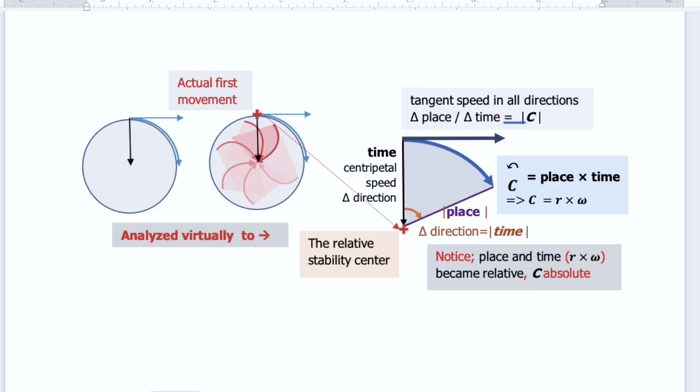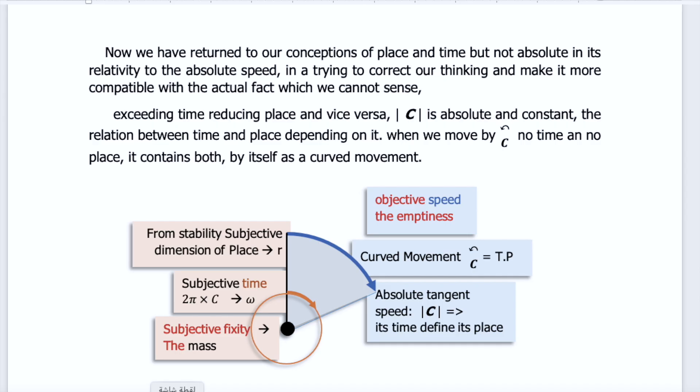So we draw the world R — which is the center and the circumference — and analyze how we analyze it into place and time by our conception. We return to our conception of place and time, but not absolute, in its relativity to the absolute speed.